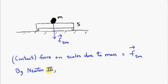Now we can apply Newton's third law, which says that if there's a force on the scales due to the mass, there must be an equal but opposite force on the mass due to the scales. So how do we write that force? It's a force on mass due to scales. It's equal but opposite to the force on the scales due to the mass. It's got the same magnitude as this vector, but points in the opposite direction. So the minus sign tells us to reverse this direction. So this is the force on the mass.